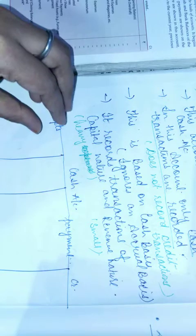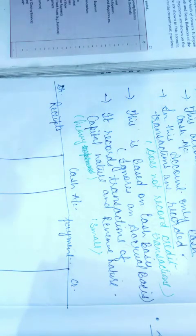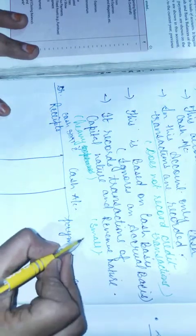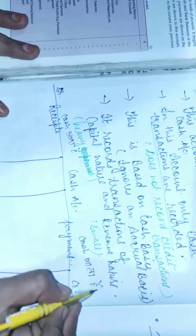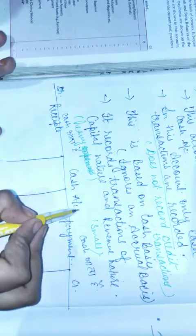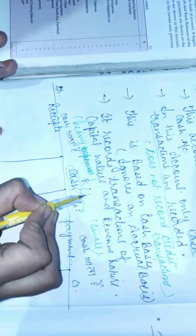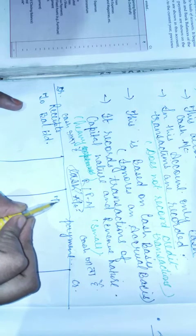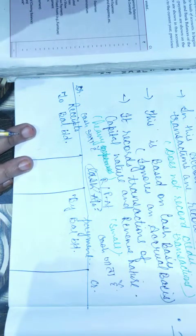On the receipt side, wherever cash comes in, we record it. On the payment side, wherever cash goes out, we record it. The receipt and payment account is just like a cash account. If there is a positive balance, we show balance b/d, and if there is a negative balance or overdraft, we show balance b/d on the other side.